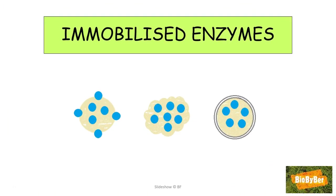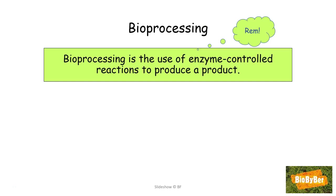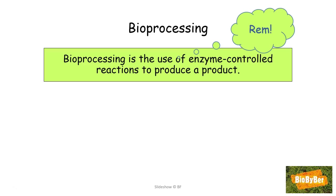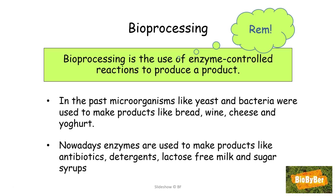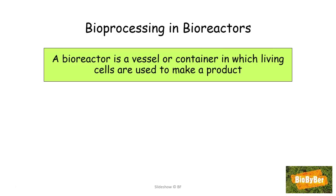Let's sort immobilized enzymes by first looking at bioprocessing. Bioprocessing comes up in the section on bacteria. Bioprocessing is the use of enzyme-controlled reactions to produce or make a product. In the past, microorganisms like yeast and bacteria were used to make products like bread, wine, cheese, and yogurt. Nowadays, enzymes can be used to make things like antibiotics, detergents, lactose-free milk, and sugar syrups. Bioprocessing is normally carried out in containers called bioreactors.